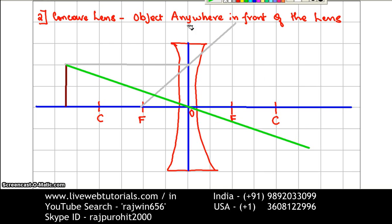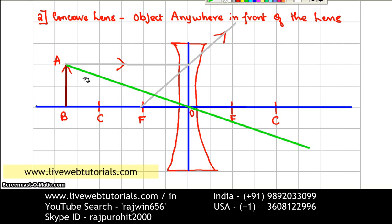Now I am going to mark the direction in which the rays are traveling. This is our object, marked as AB. Through A, I have drawn a ray parallel to the principal axis — this ray passes through the focus. The second ray travels from A towards the optical center and goes straight without deviation. Where both the gray-colored ray and the green-colored ray appear to meet marks the position of the image, which will be marked as A'B'.